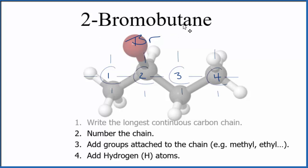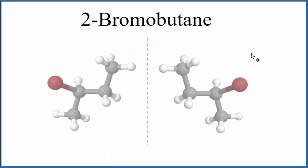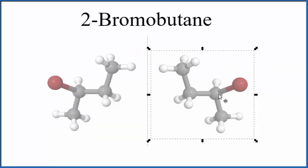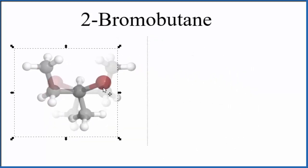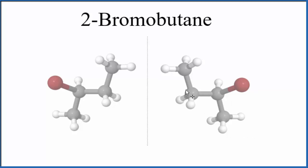There's a little bit of a challenge with 2-bromobutane, and that's that it's chiral. It has enantiomers. It's a stereoisomer. We really can't put one on top of the other — they're actually very different. You see the bromine is on the wrong side. No matter how you rotate these, they're going to be different. They're going to be enantiomers. They're going to be chiral.